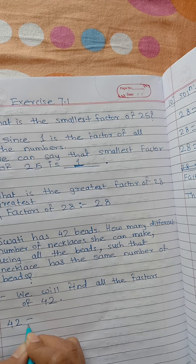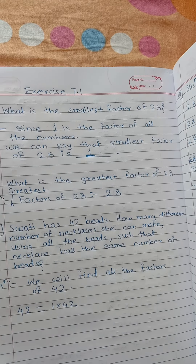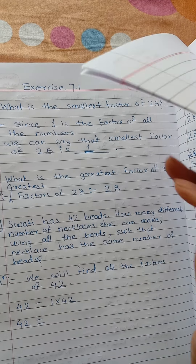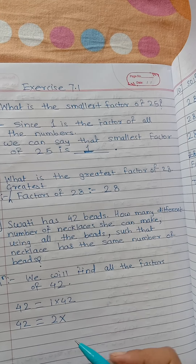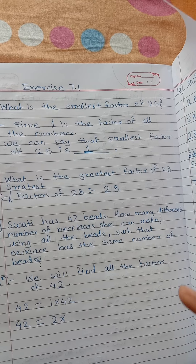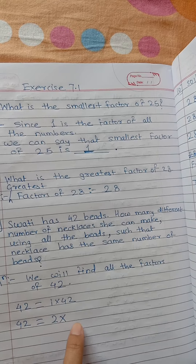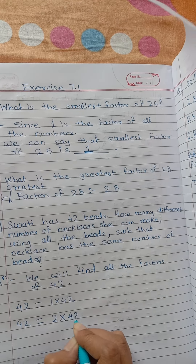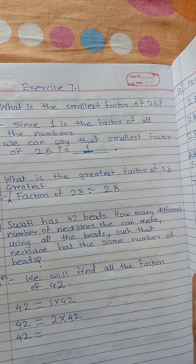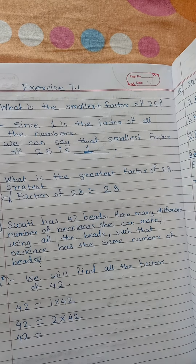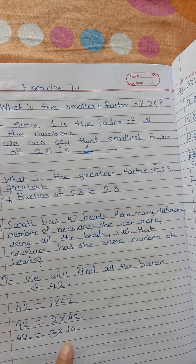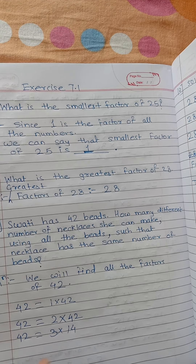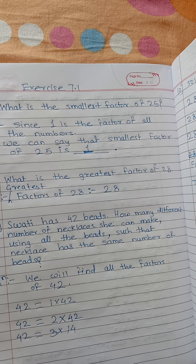Finding factors of 42: First factor — 1 and 42. Next, 2: since 42 is an even number, 2 is a factor. 21 multiplied by 2 is 42, so 2 and 21 are factors. Next, 3: 3 is a factor of 42 — 14 multiplied by 3 is 42, so 3 and 14 are factors. Next, 4: does 42 come in the table of 4? No — dividing 42 by 4 gives remainder 2, so 4 is not a factor of 42.